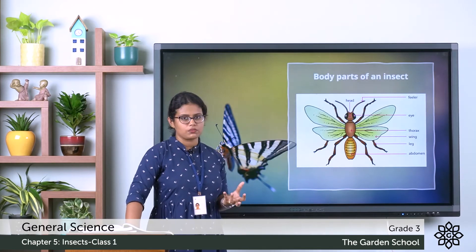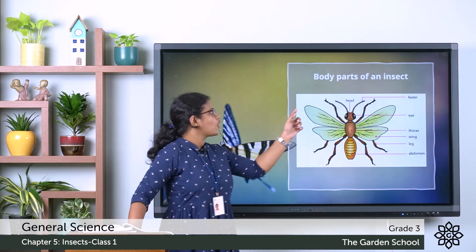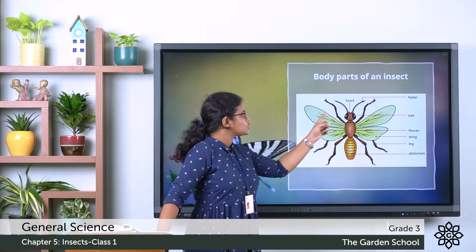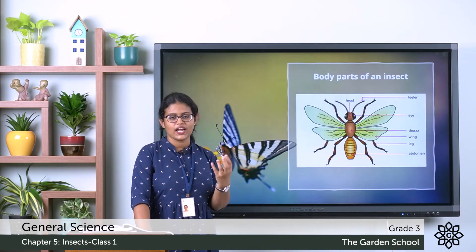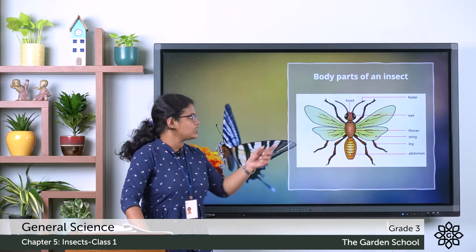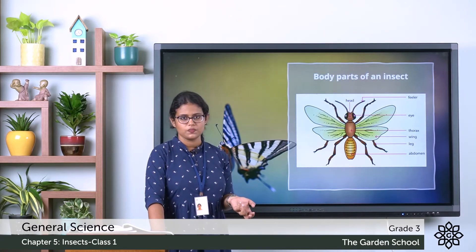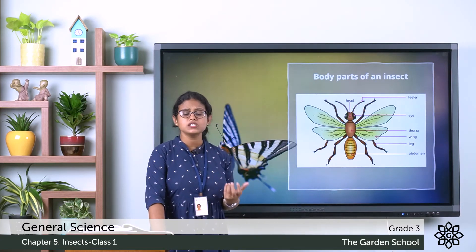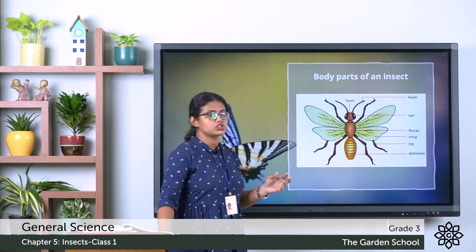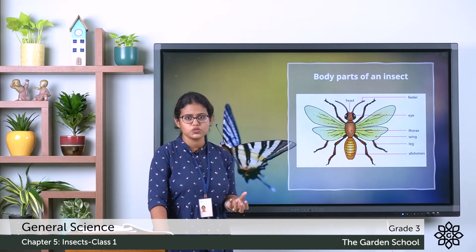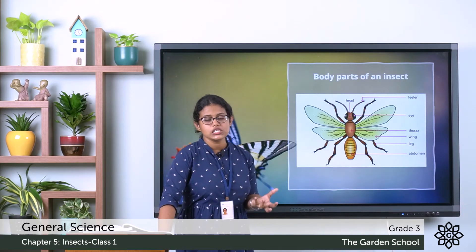Starting with the first part, that is the head. The head has a pair of feelers, two eyes, and a mouth. If we use a magnifying lens to observe it, we can see the two feelers, also called the long antenna. These feelers help the insect to smell and feel things. Then they have eyes that help them to see.